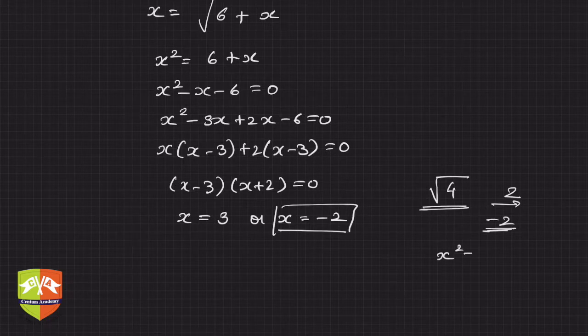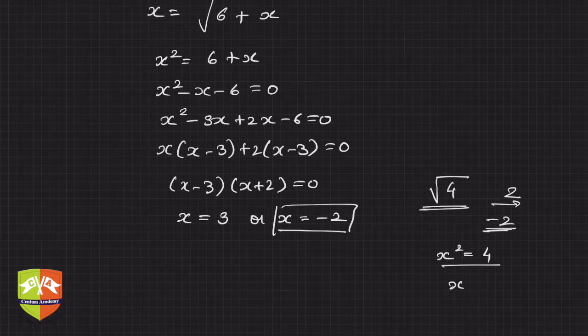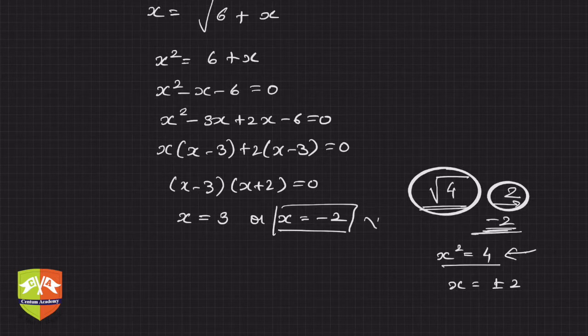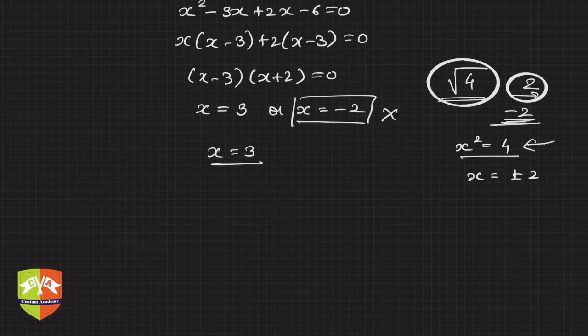So if you write x square is equal to 4, then you can write x equals plus minus 2 when you are solving this equation. But if root 4 is given, the only value is 2 and never write this as minus 2. So here also we will reject this value, so x is 3.